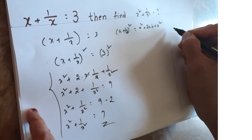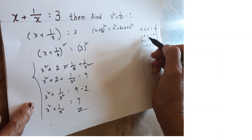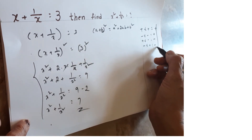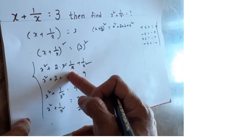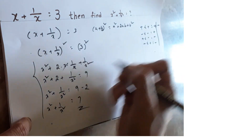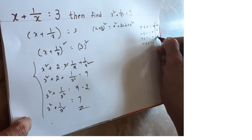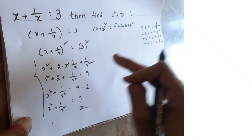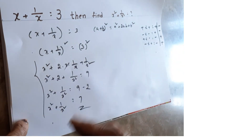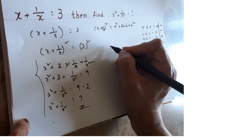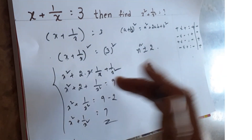For the trick, remember these sign rules: plus × plus = plus, minus × minus = plus, plus × minus = minus. But in these algebraic expression problems involving squaring, cubing, or power of 4, you take the opposite sign — ultra minus. If plus is there, you take minus; if minus is there, you take plus. The simple formula to remember is: n² ± 2.